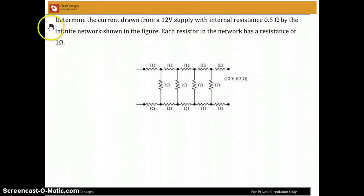Okay, Murari, so the question you asked is here. Determine the current drawn from a 12-volt supply with internal resistance 0.5 ohm by the infinite network shown in the figure. Each resistor in the network has a resistance of 1 ohm.